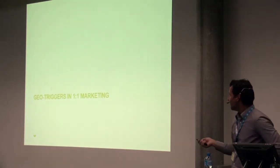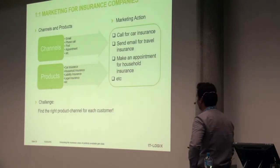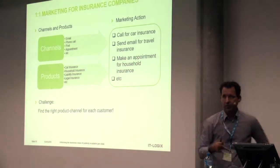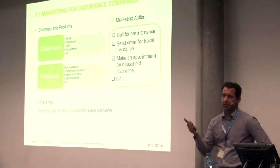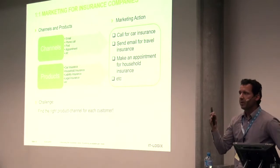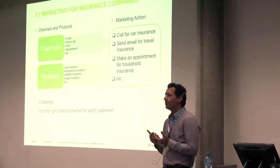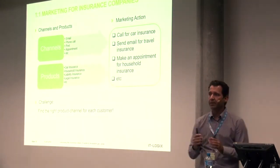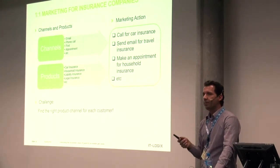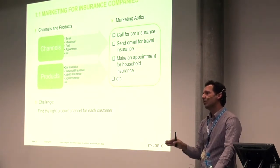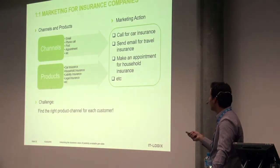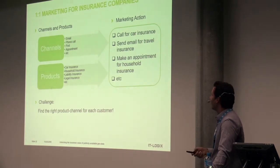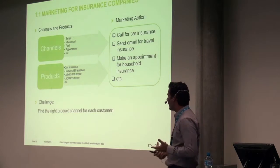The third topic is about geo-triggers in one-to-one marketing, and I'll show a framework for insurance companies. Nowadays when we talk about products and channels — channels being email, phone calls, post, or personal appointment, and products being car insurance, household insurance, liability, and so on — we tend to think of them as product-channel pairs, as one unit. If you have a very good product but a poor channel to push it to customers, that can result in low sales. With four channels and four products, you create 16 product-channel pairs, such as a phone call marketing action for car insurance, email, making an appointment, and so on. The challenge is to find the right product-channel pair for each customer.